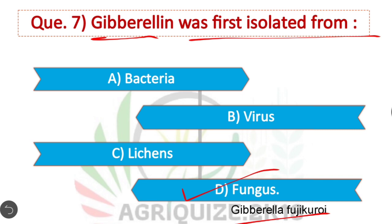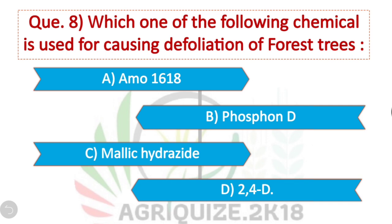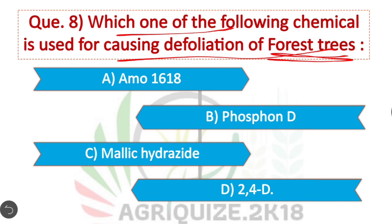Question 8: Which one of the following chemicals is used for causing defoliation of forest trees? Option D is correct. 2,4-D is the chemical used for causing defoliation of forest trees.